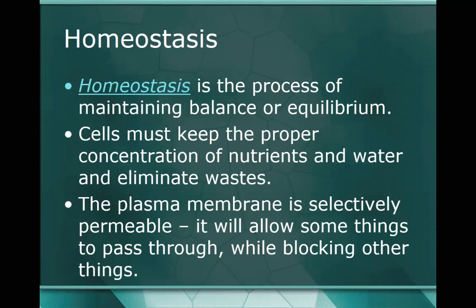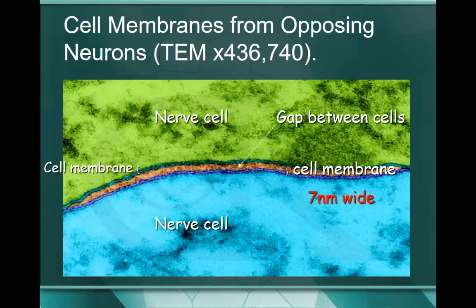We have much more technology than when they first discovered these things, so we're able to get a pretty good idea of what they look like. This is an interesting micrograph captured by an electron microscope so you can actually see the membranes. If you take a look, the membrane itself actually has two parts - there's one part right here and then there's the other part right here. You can actually see the two different lines.